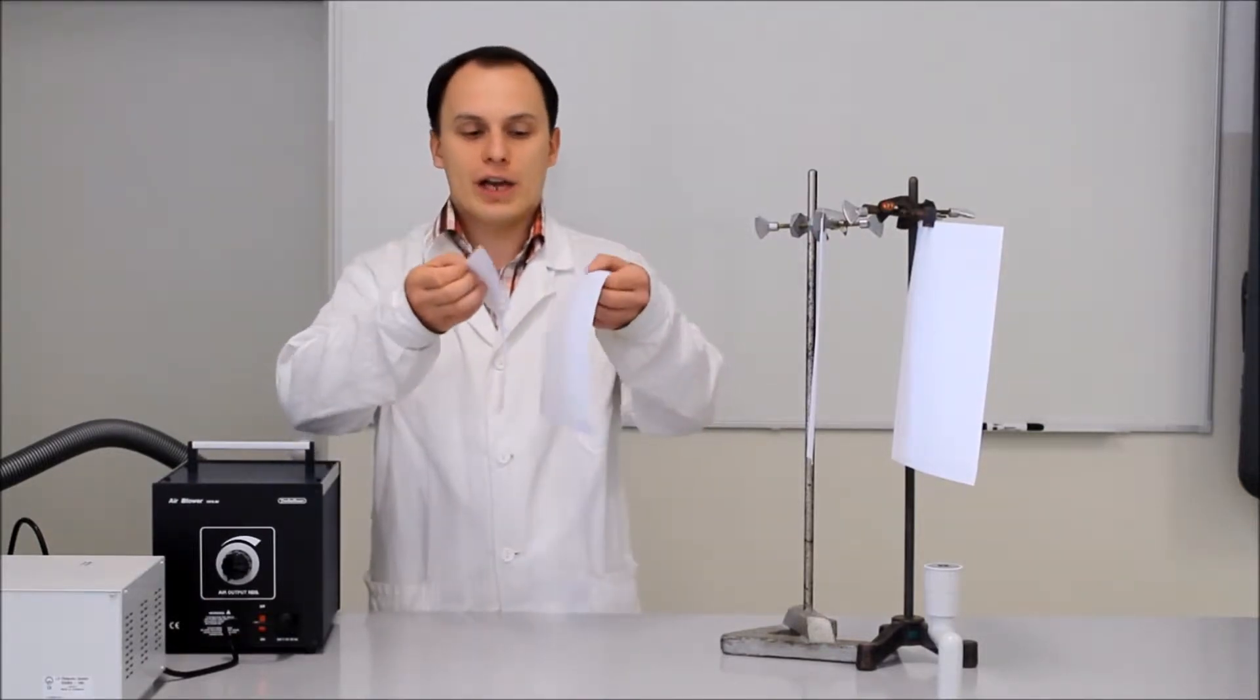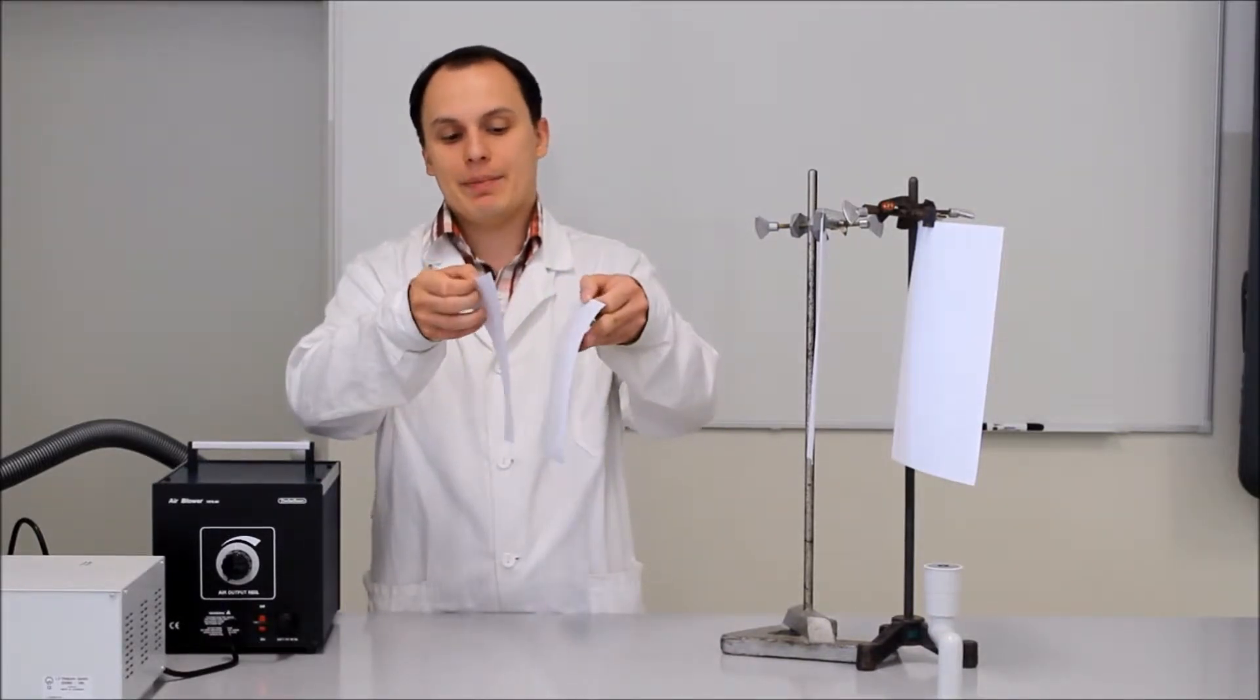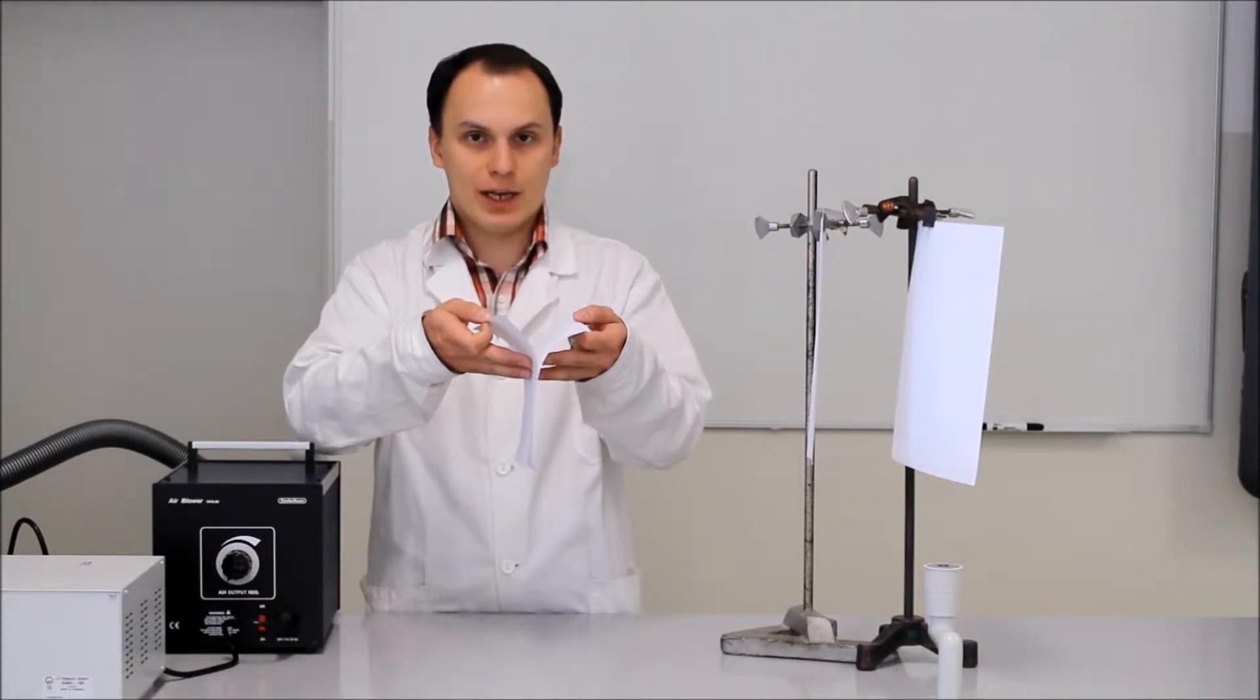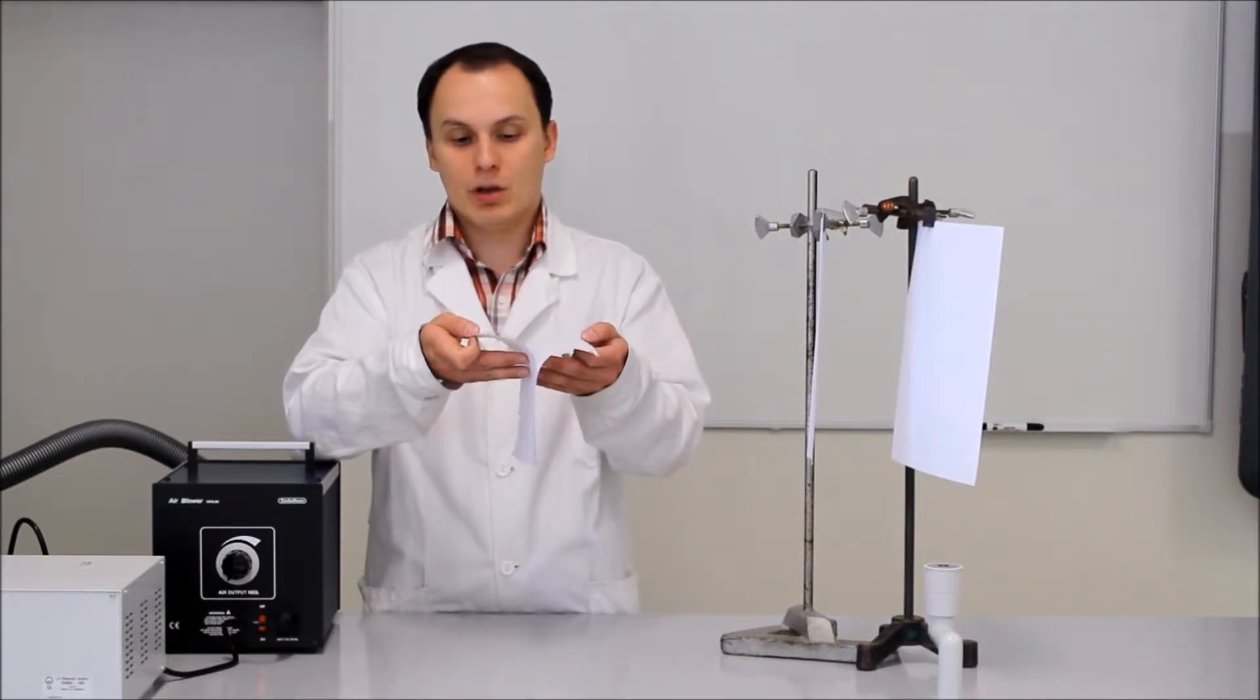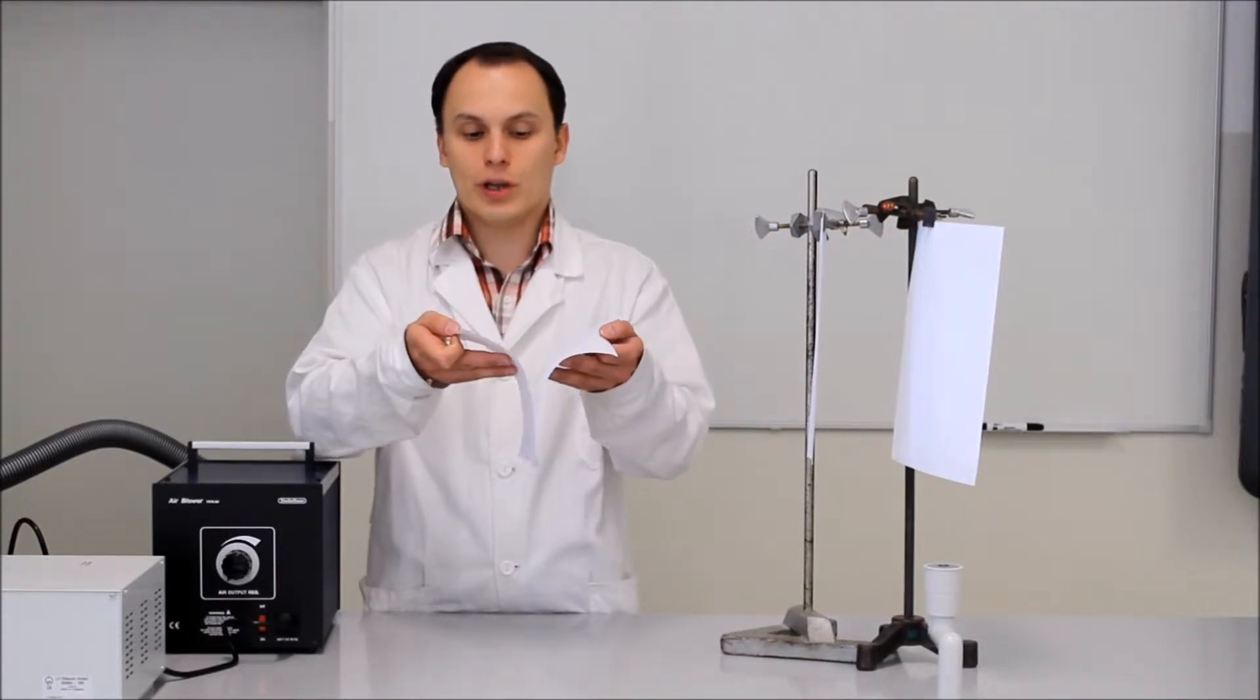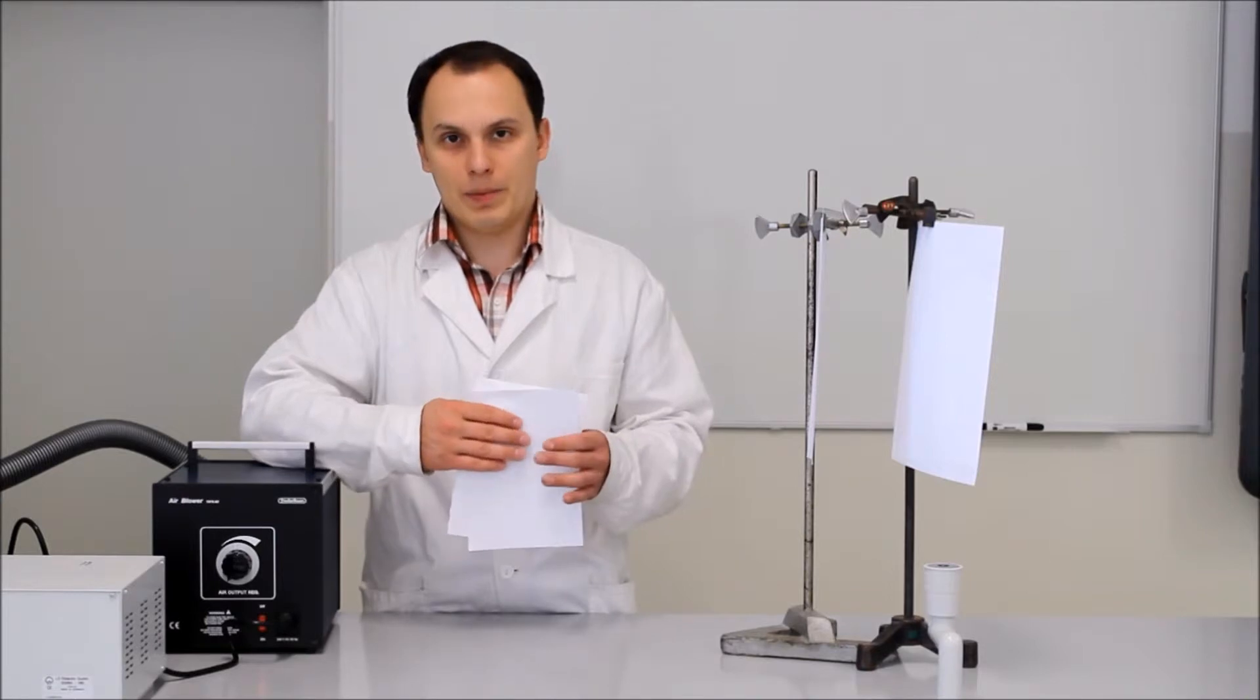Elvárhatnánk azt, hogy a fújás következtében a két papírlap elválik egymástól. Ezzel szemben látható, hogy a két papírlap egymás felé mozdult el, ugyanúgy mint a Bernoulli törvény miatt. Az áramlási sebesség megnőtt, azaz a papírlapok között a nyomás lecsökkent, és a nagyobb külső légnyomás összenyomta, összeszorította a két papírlapot.